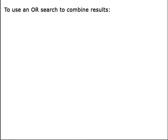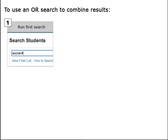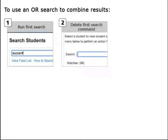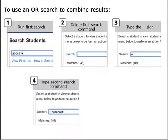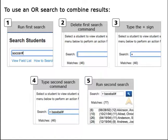Remember, when you need to search for and combine information that is recorded in different fields, do the search in waves by using the plus sign. Begin by running the first search. Delete the first search command, type the plus sign followed by the second search command, and run the second search. The result is a combined list of the results for both searches.